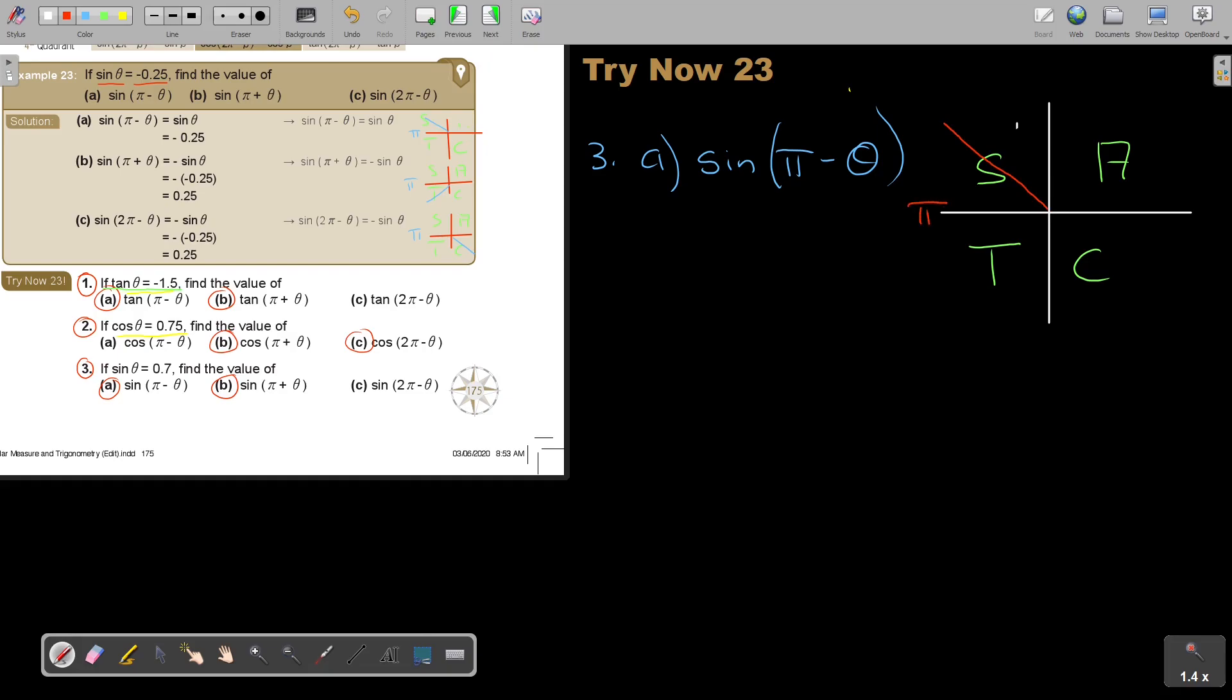Because it's pi minus theta. So it's in this quadrant. And what is sin in that quadrant? Sin is positive. So it's positive sin theta. And what is sin theta? It's 0.7. And then number B.